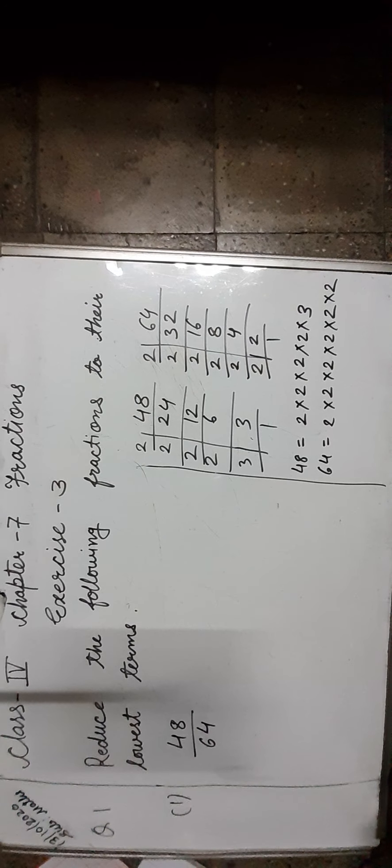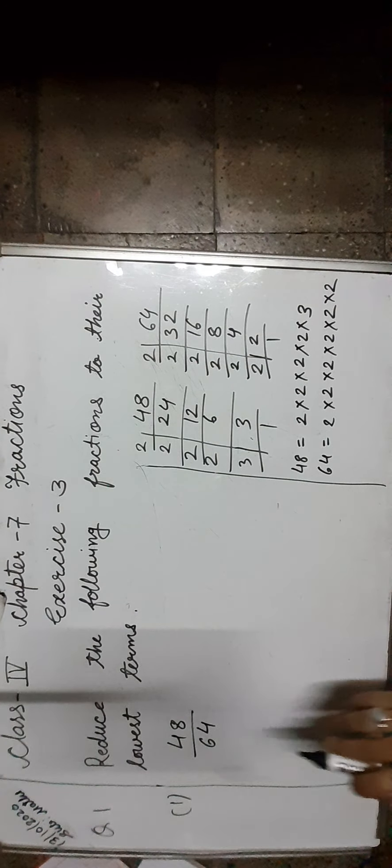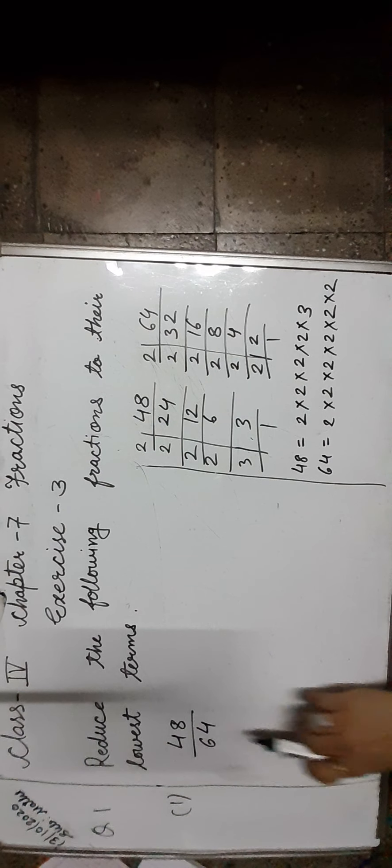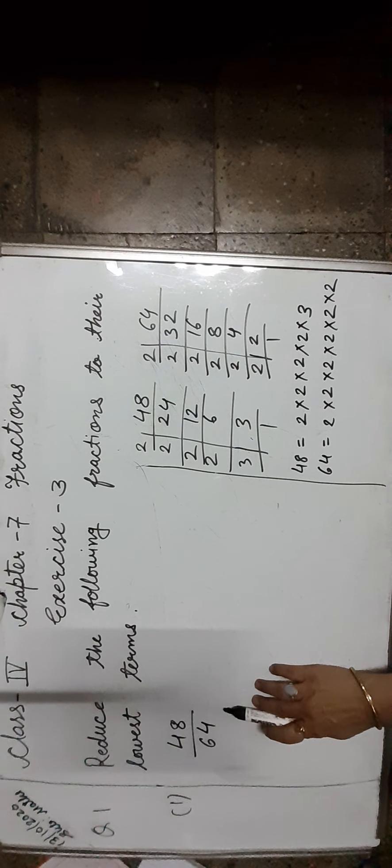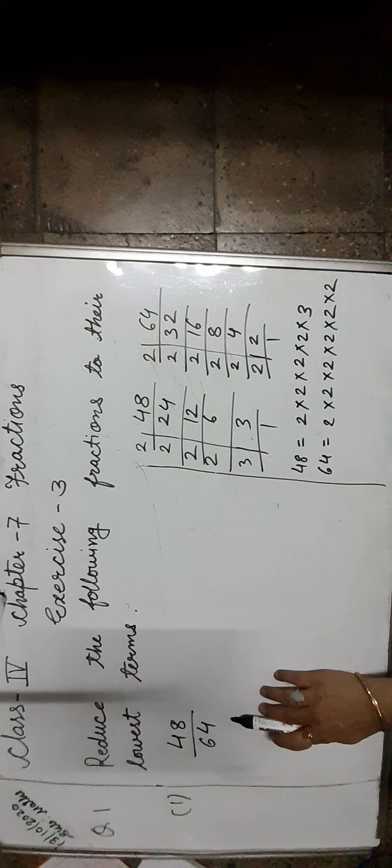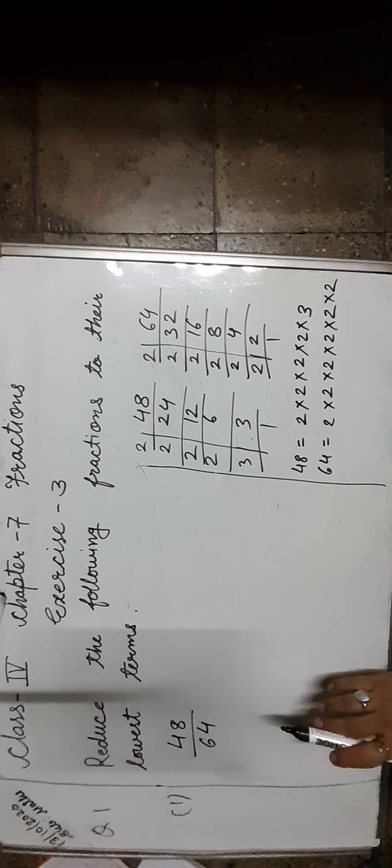Hello everyone, this is the maths class for standard 4. Today we will do exercise 3 of chapter 7. Question number 1 is: reduce the following fractions to their lowest terms. Students, when we divide the numerator and the denominator of a fraction by their HCF, we get the fraction in the lowest term.